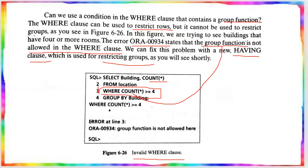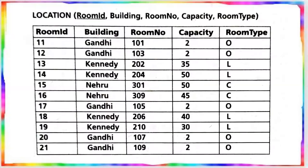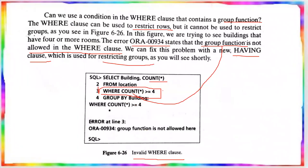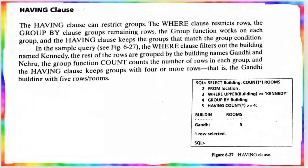In this example, you can see the location table. In this table, the building 'Gandhi' appears 5 times, 'Kennedy' appears 4 times, and 'Nehru' appears 2 times. If we apply the condition where count is greater than or equal to 4, we use HAVING COUNT greater than or equal to 4, and the output will show the buildings with 4 or more occurrences.